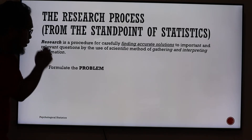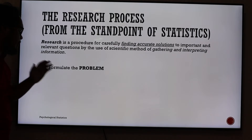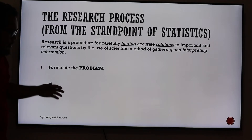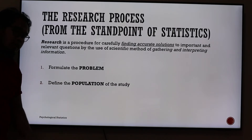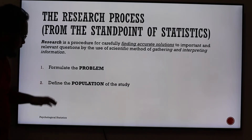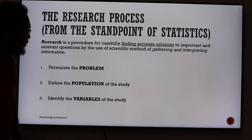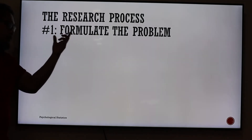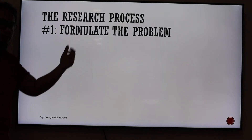When we inject statistics in research, we are actually looking at three steps. First, we want to formulate the problem. Then we want to define the population of the study. And third, we need to identify the variables of that study. We're going to talk first about number one — formulating the problem.